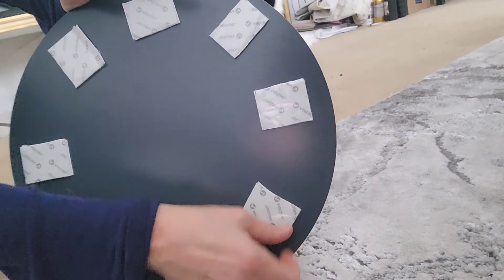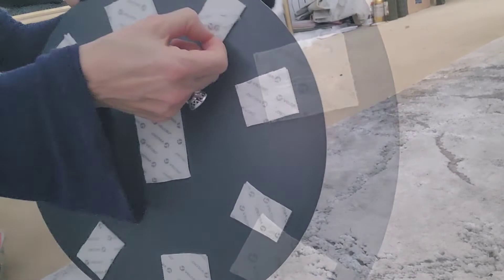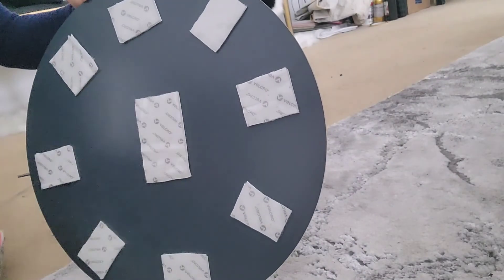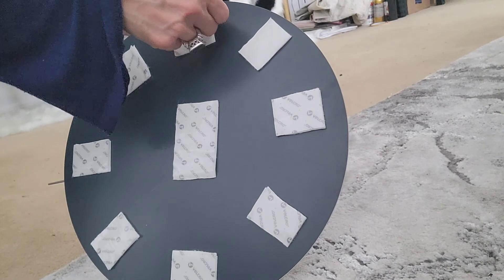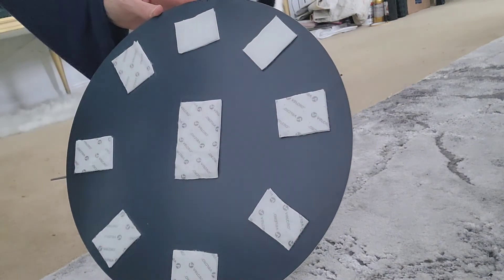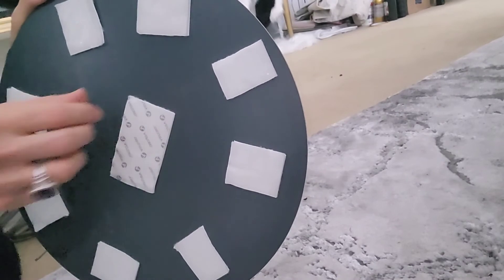Then I started removing the backing from all of the Velcro to be able to adhere it to the wall. I would say stick the Velcro on that large mirror first without removing the backing, then work on the front part of it to make it easier.